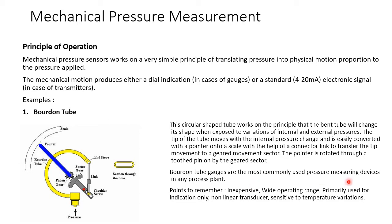Bourdon tube gauges are the most commonly used pressure measuring devices. Since they are the most common mechanism, they are also inexpensive, have a wide operating range, and gauges are available for different ranges. They are mostly used for indication purposes only.